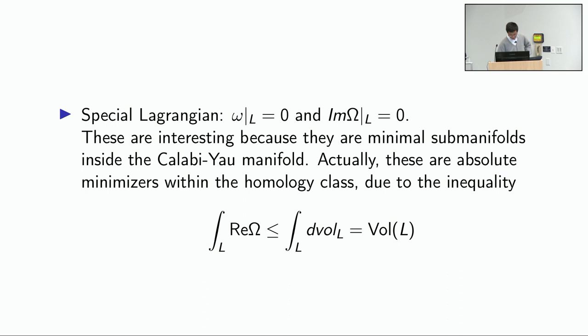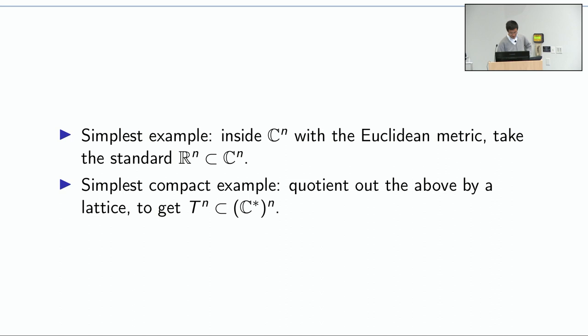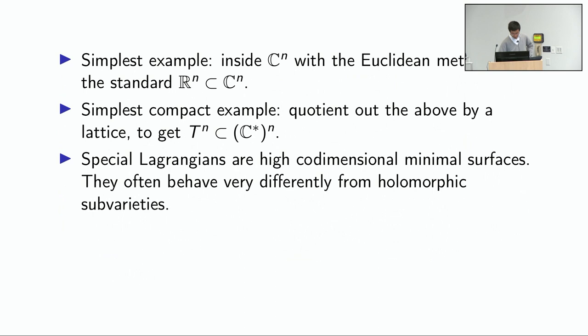The simplest example is just the standard copy of R^n inside C^n. The simplest compact example is the quotient, giving a copy of the torus inside (C*)^n. These things are generally speaking quite high codimensional and very much unlike minimal hypersurfaces. In some sense they're also quite different from holomorphic subvarieties, in that the singularity structures can be much more complicated.